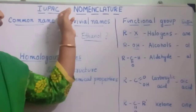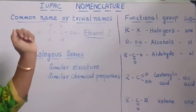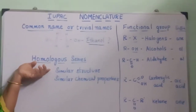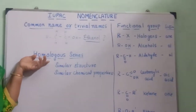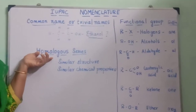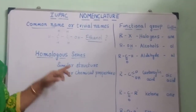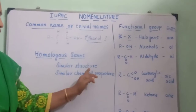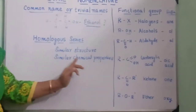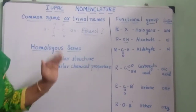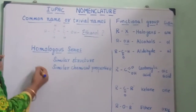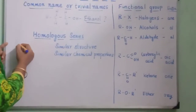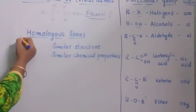To study IUPAC nomenclature, we have to know two things: number one is homologous series, and number two is functional group. What is meant by homologous series? Homologous series are a group of organic compounds which possess similar structure and similar chemical properties. To understand this further, let us take an organic compound — for example, methane, with the formula CH4.